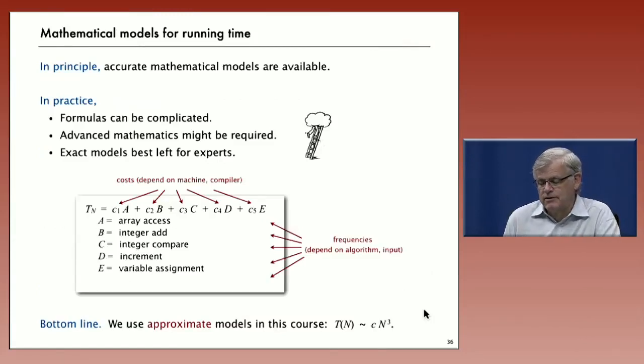In principle, Knuth tells us that accurate mathematical models are available. In practice, we can get really complicated formulas. We also might need some advanced mathematics that the theoretician will revel in, but that maybe people learning algorithms for the first time might not be expected to know. So in the end, careful exact models are best left for experts. There's really a lot of things that can go on. On the other hand, approximate models are definitely worthwhile, and for all the algorithms that we consider, we'll try to communicate a reasonable approximate model that can be used to describe the running time. Sometimes we'll give the mathematical proofs, and other times we'll have to just cite the work of some expert.